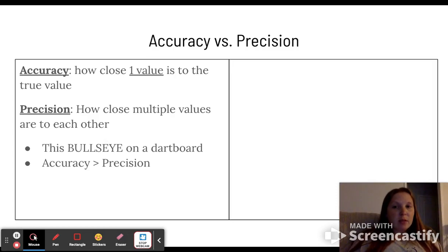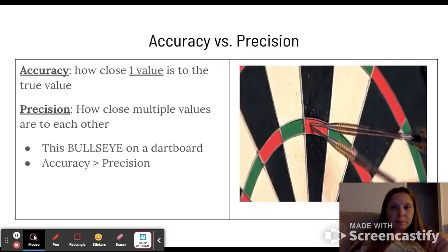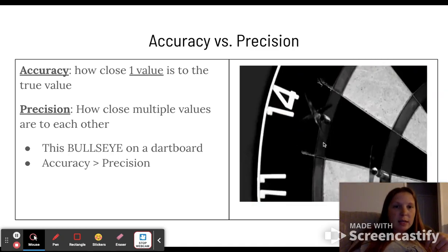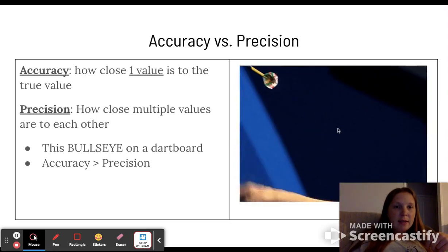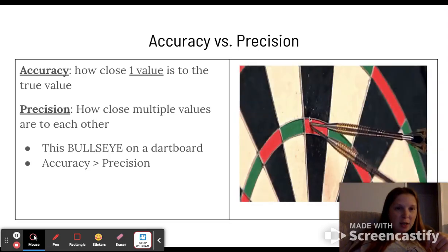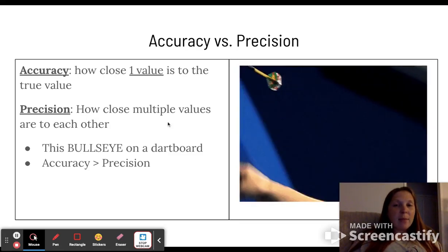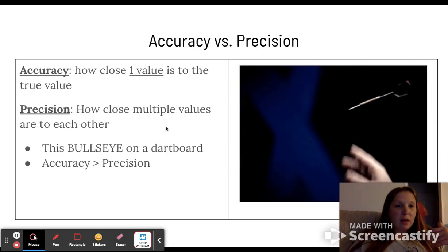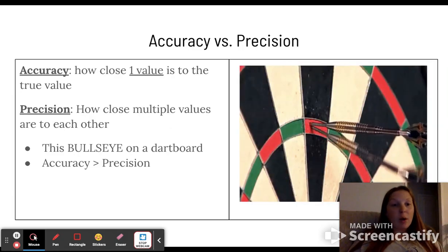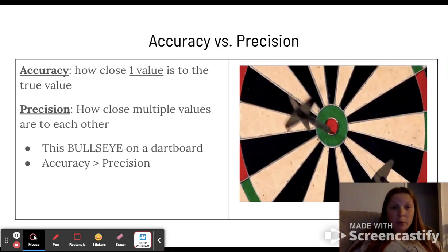Accuracy for us in the lab is greater than precision. If we can make it a one-and-done lab, that's great because we don't have time in a high school chemistry class to run a lab multiple times. This is like the bullseye on the dartboard. The bullseye would be our true value. You might be accurate or precise, you could be both, or you could be neither.